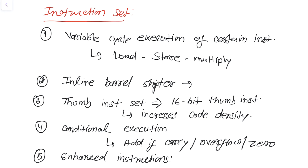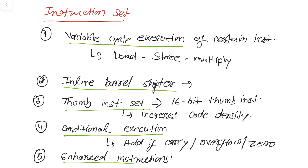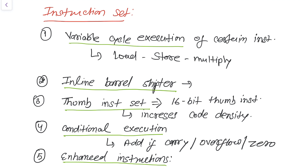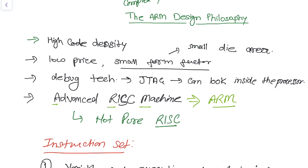Overall in this lesson we discussed five features: variable cycle execution, inline barrel shifter, Thumb instruction set, conditional execution, and enhanced instruction set in the ARM microcontroller. We also discussed the ARM design philosophy. In the next lesson I'll discuss the use of the ARM microcontroller in embedded system hardware design. Thank you so much for watching — please subscribe to the channel so you can get updates directly to your inbox. Bye bye, have a nice day!